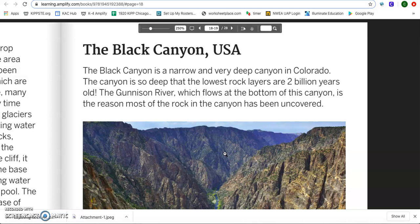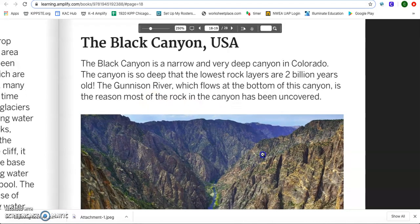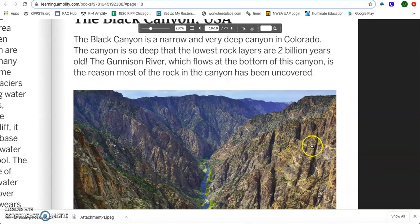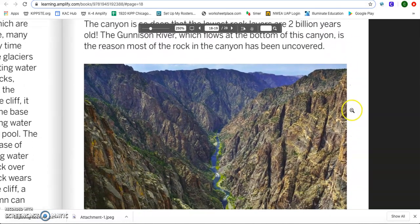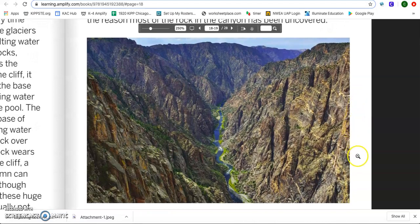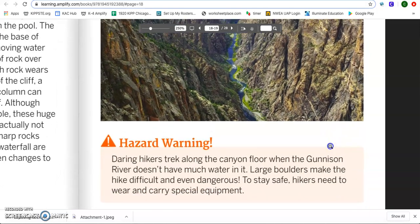Remembering also that you are reading along with me. Make sure you are not distracted by anything else because you don't want to miss anything that's going to help you answer that question. The Black Canyon, USA. The Black Canyon is a narrow and very deep canyon in Colorado. The canyon is so deep that the lowest rock layers are 2 billion years old. That is a very long time, you guys. The Gunnison River, which flows at the bottom of this canyon, is the reason most of the rock in the canyon has been uncovered. So I'm looking at the Gunnison River, and you can see it is very low. And look at how deep this canyon is, and that connects with the 2 billion years that this rock layer has been getting deeper and deeper. That is a very large canyon.